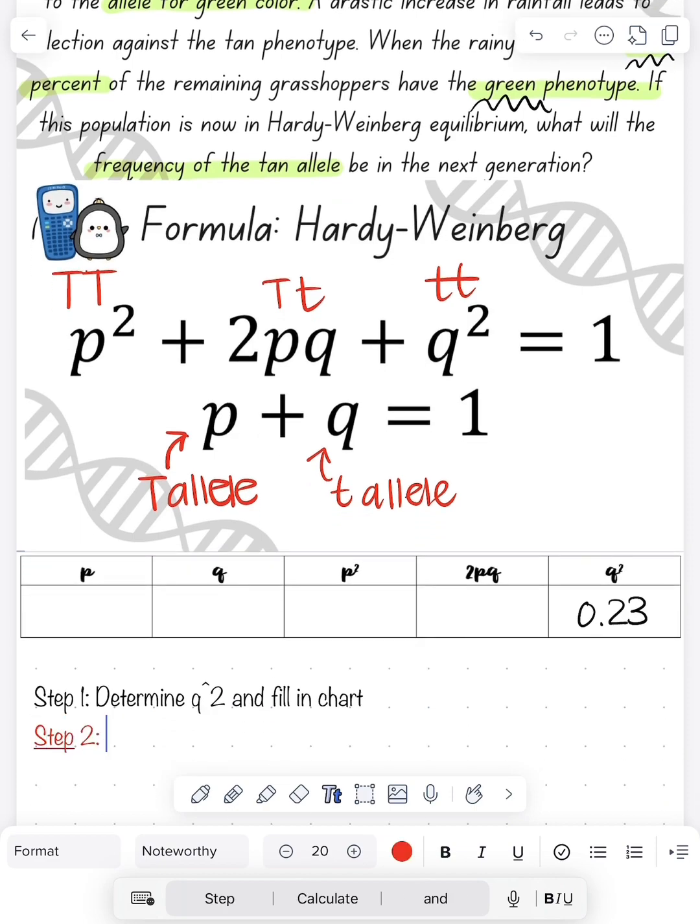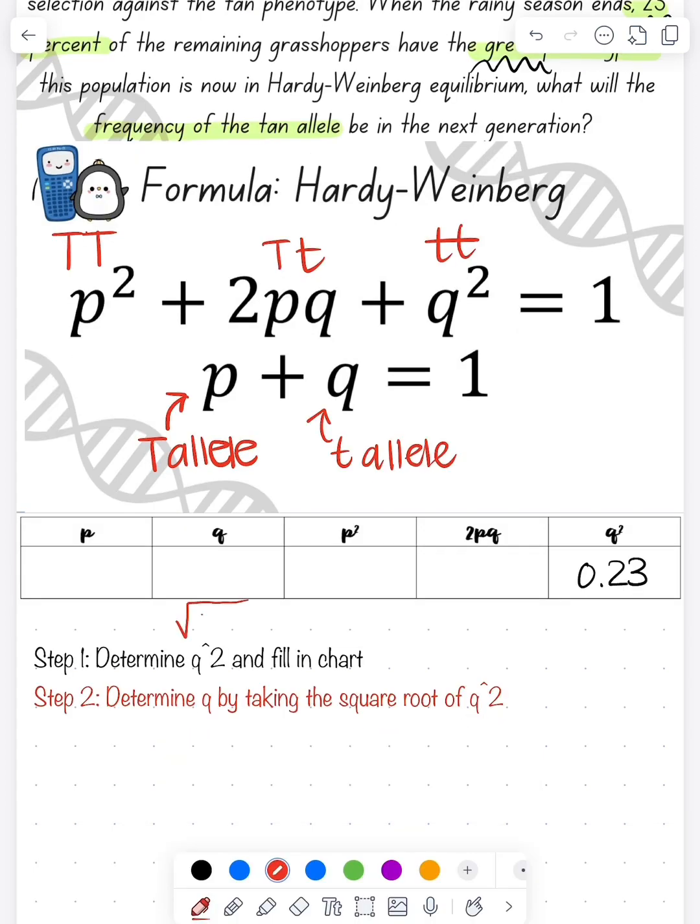Now that I know q squared, our next step is to take the square root of that to find just q. So we'll take the square root of 0.23, which is going to give us 0.48.